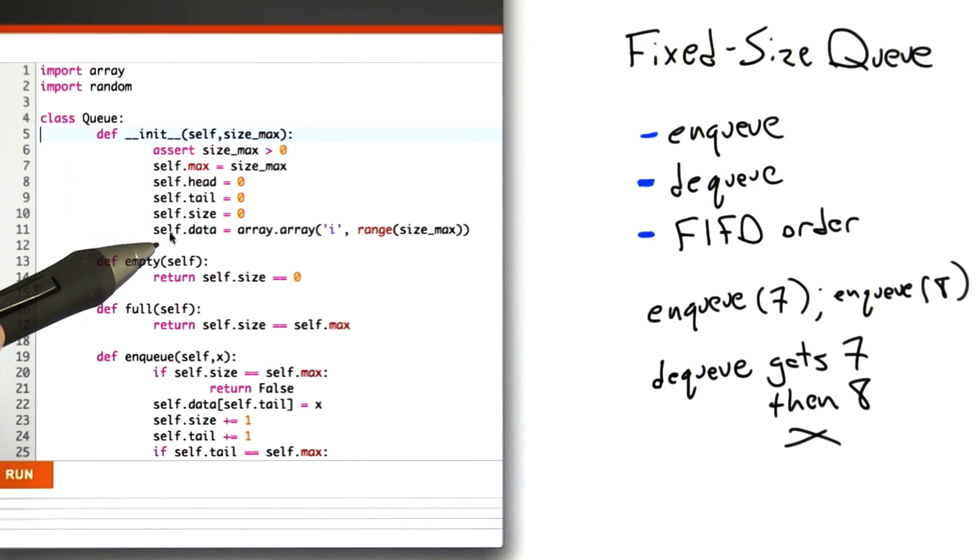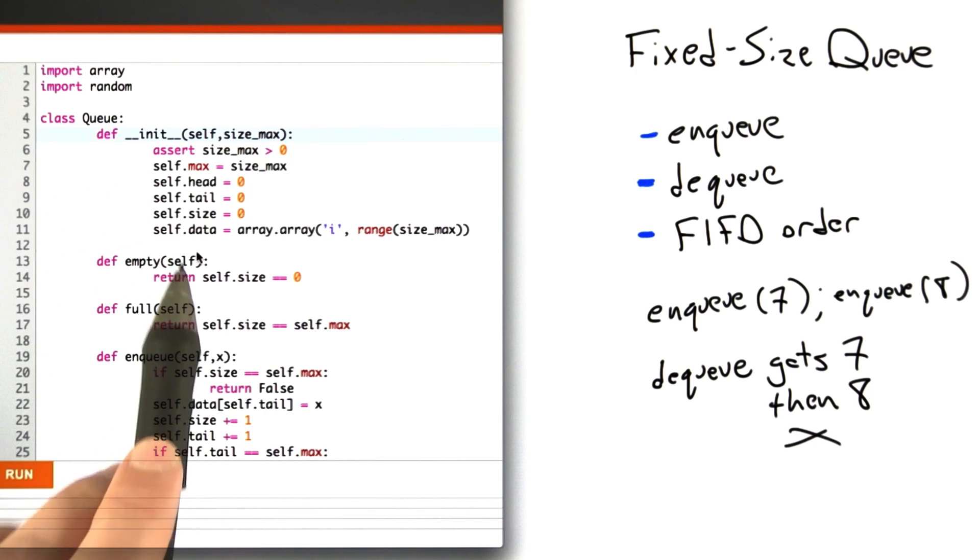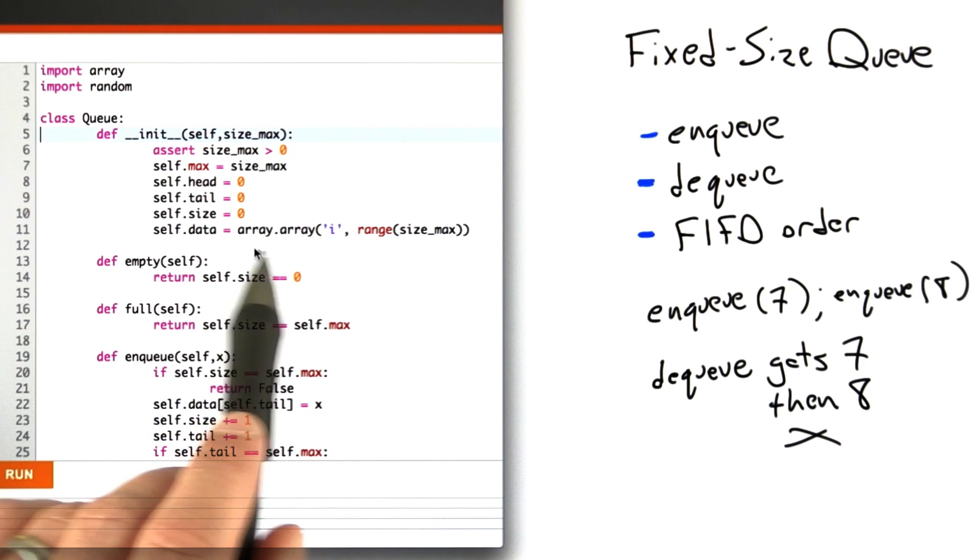The constructor sets up the data structure. First it makes sure size_max is greater than zero, saves a copy of that, initializes head and tail pointers, a size variable which stores the number of objects currently in the queue, and finally reserves space for the queue elements by allocating a Python array.